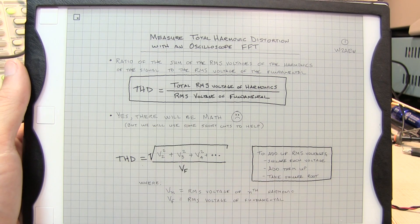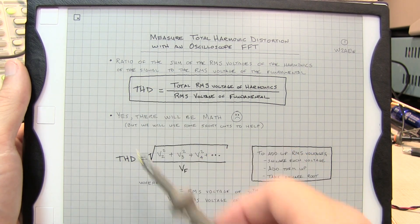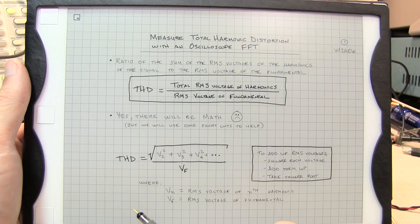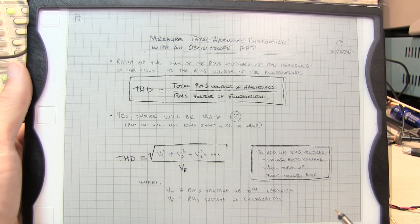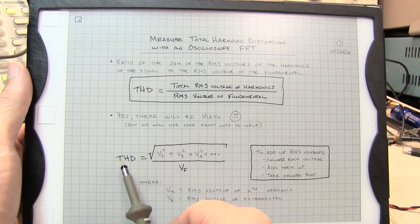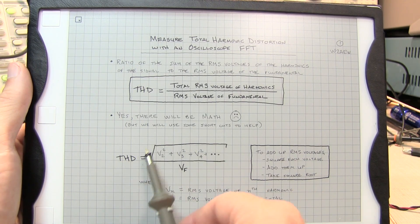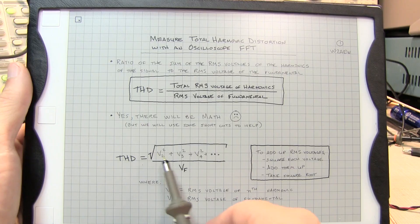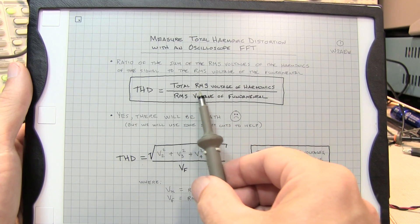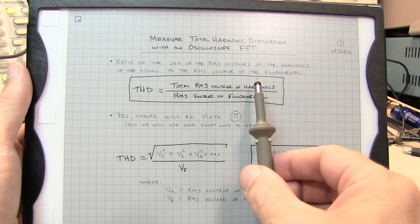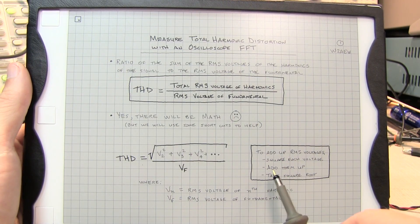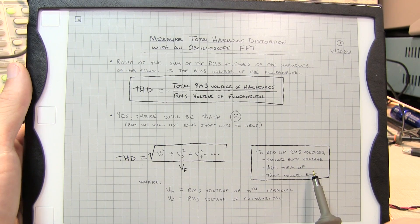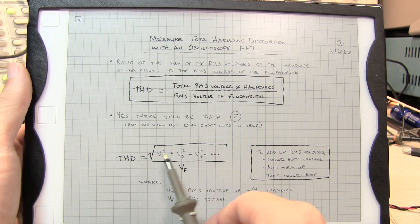Now, of course, there's going to be some math involved when we're computing the THD from the FFT result, but we're going to use some shortcuts to help us out with that. The equation you typically see for computing total harmonic distortion is this. Now what's going on in the top here is adding up the total RMS voltage of all the harmonics. When you add RMS voltages, the process is to square each voltage, add them all up, then take the square root of the sum.